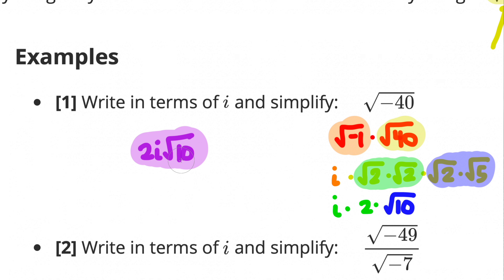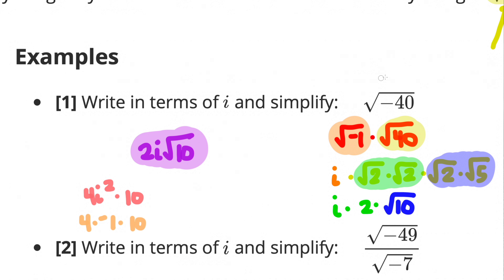One way of checking your work is to square your answer. If you square 2i√10, you get 4i² · 10. Since i² = -1, that's 4 · (-1) · 10 = -40, which checks out. So if you square your answer, you should get what's under that radical symbol.